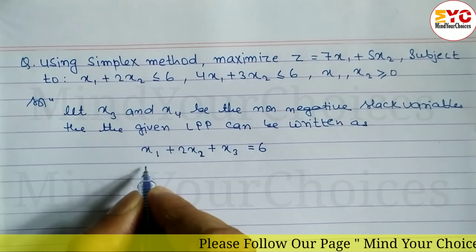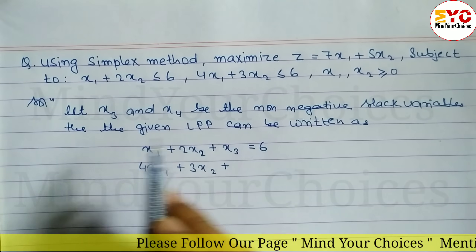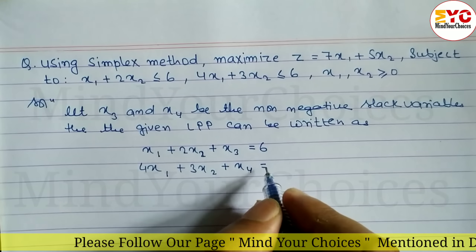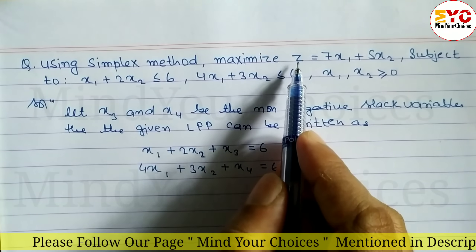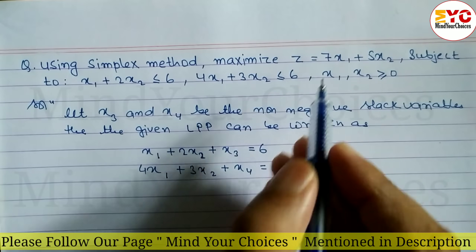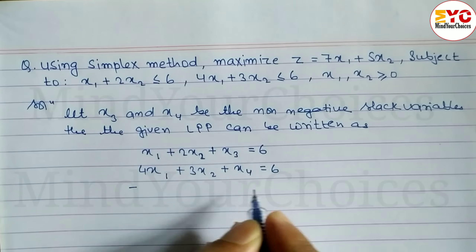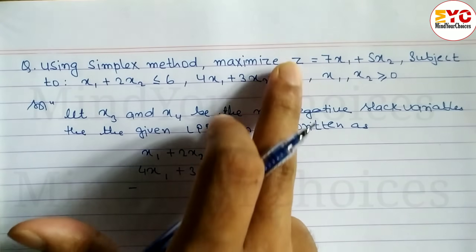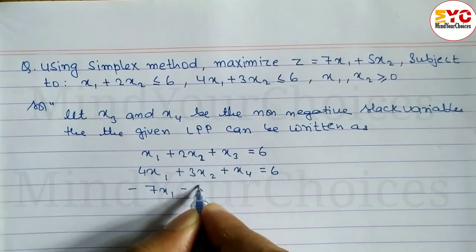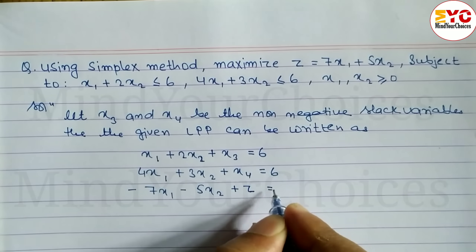Similarly, for the second constraint, we add slack variable x4. So 4x1 plus 3x2 plus x4 equal to 6. For the objective function, we bring the terms to the left side: minus 7x1 minus 5x2 plus z equal to 0.